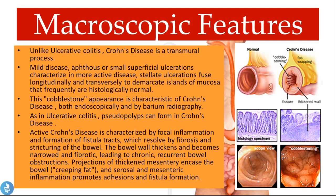Looking at the diagram, you can see a normal bowel wall compared to active Crohn's disease. In active disease there is a thickened wall due to the inflammatory process, fissures which are penetrations into the wall, the cobblestone appearance, and wrapping of fat around the bowel wall.